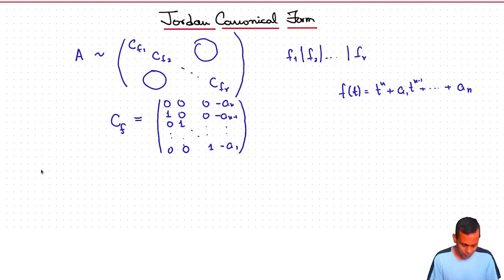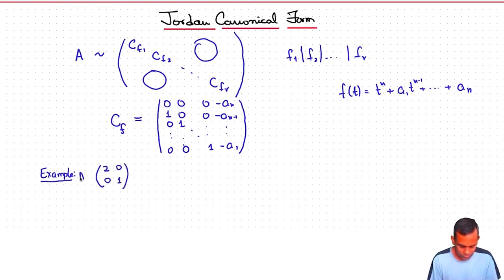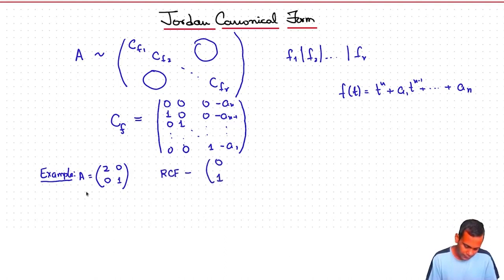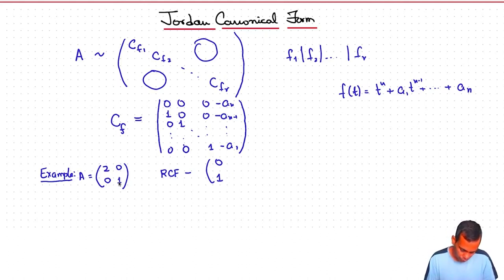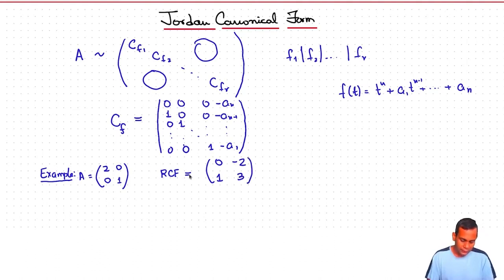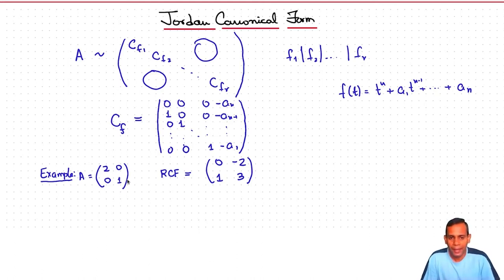Let's look at a very simple example. Take the matrix [2, 0; 0, 1]. Its rational canonical form is the companion matrix of its characteristic polynomial, which is T² − 3T + 2, giving the matrix [0, 1; −2, 3]. So this very nice matrix — the fact that it has two distinct eigenvalues, namely 2 and 1, and that it's diagonalizable — all this is lost in the rational canonical form.